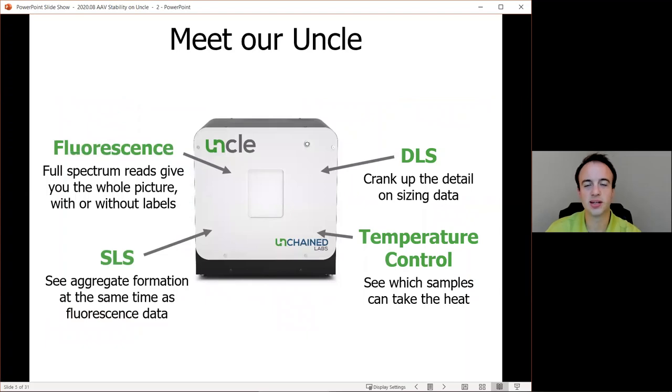That's where UNCLE comes in. UNCLE is an all-in-one stability platform built for biologics. It uses two lasers to excite either label-free protein intrinsic fluorescence or a variety of dye-based fluorescences. With full-spectrum fluorescence detection, UNCLE can pick up both kinds of signals from either proteins or dyes. SLS is the scatter light from those two lasers, and it gives information on what aggregates form.